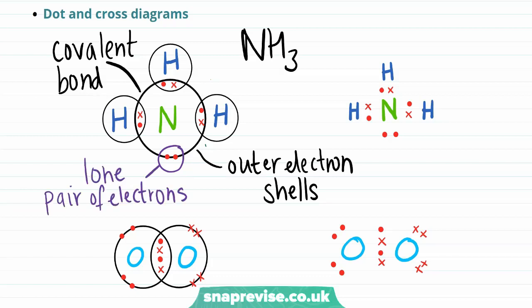We can simplify this dot and cross diagram by removing the outer electron shells, as is shown here on the right. All the other features remain, and you can see that nitrogen has formed three covalent bonds to three hydrogen atoms, making a molecule of ammonia.